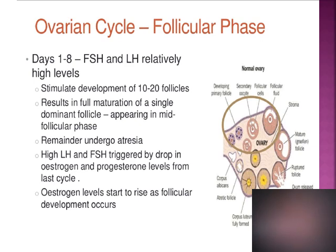During the follicular phase, on days 1 to 8, the levels of FSH are relatively high due to the low levels of estrogen and progesterone from the previous cycle. This results in positive feedback to the anterior pituitary, stimulating FSH and LH. The high levels of FSH and LH stimulate the ovary and recruit around 10 to 20 primary follicles for that particular menstrual cycle. One menstrual cycle results in full maturation of a single dominant follicle, while the remainder undergo atresia.